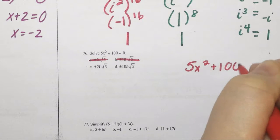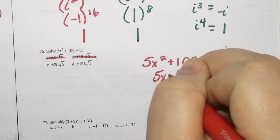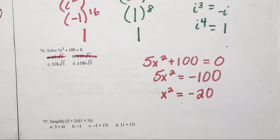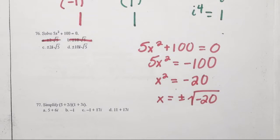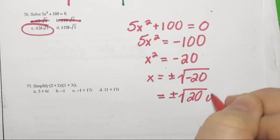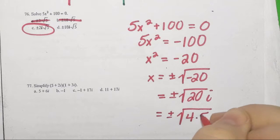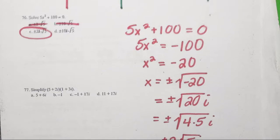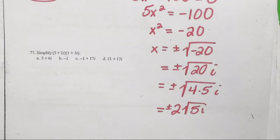We had 5x squared plus 100 equals 0. If I divide by 5, I'll have x squared equals negative 20. So I have x equals plus or minus the square root of negative 20. The answer is C. It's plus or minus the square root of 20i, that's the negative 1 under the radical. 20 is 4 times 5, so it's 2 square root of 5i.